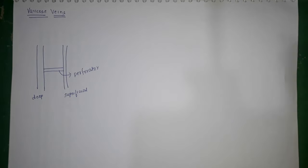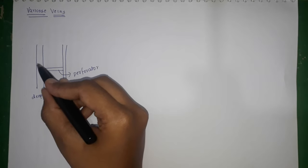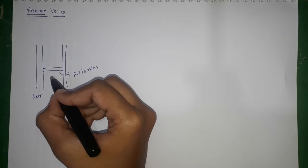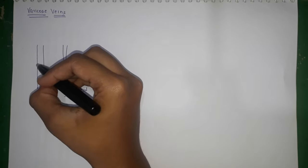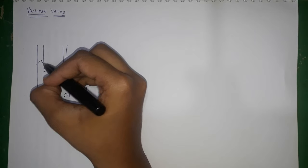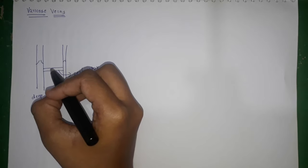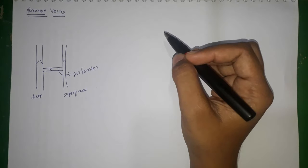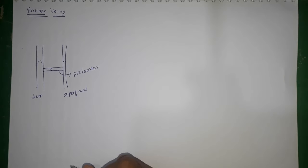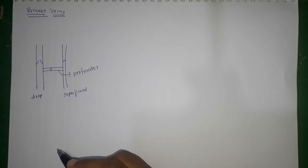One speciality of the venous system in the lower limbs is that all three — the deep, the superficial, and the perforators — all have one-way valves in them. The main purpose of these valves is they allow flow of venous blood in only one direction, not the other way around.